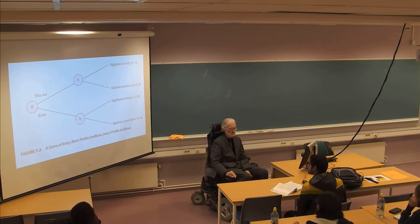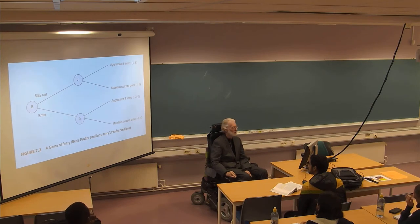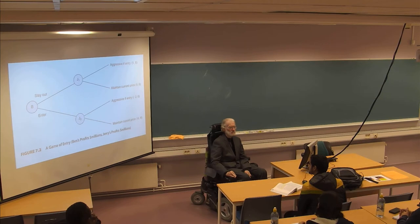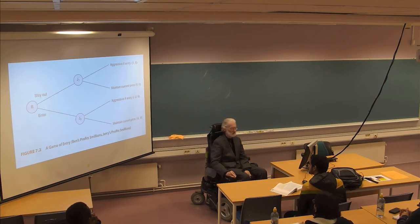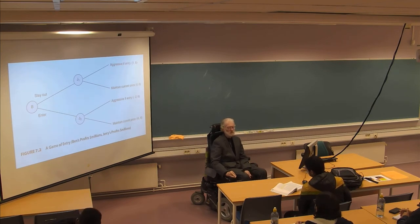In this game there is a technique to determine whether a threat is credible or not. We check whether it is a Nash equilibrium in all parts of the game by dividing the game into sub-games. If it is a sub-game perfect Nash equilibrium, we conclude the threat is not credible. We know that 4-4 for the total game is a Nash equilibrium.